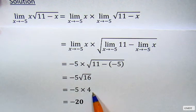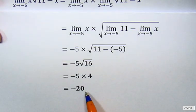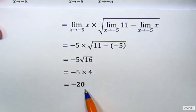Square root of 16 is 4, so we have -5 times 4 equals -20 as our final answer. Thank you.